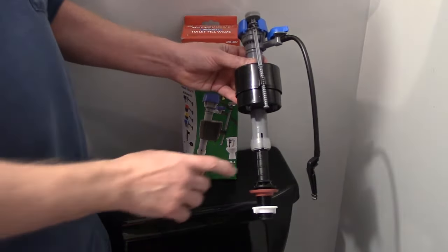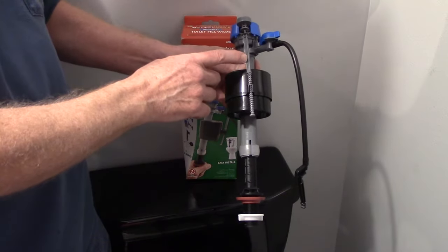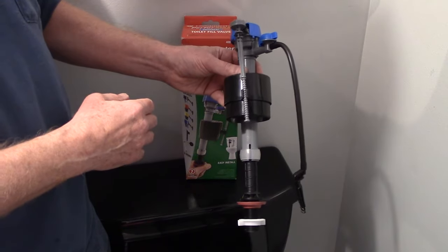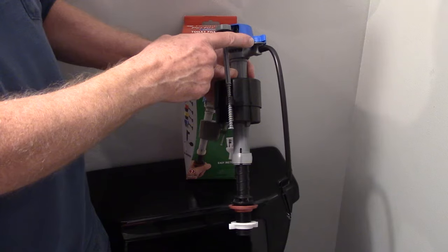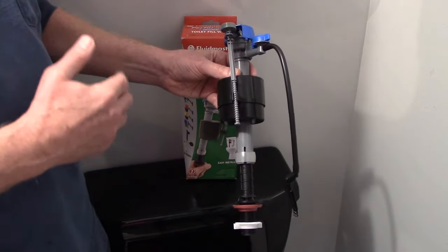The Performax will adjust from 9 to 14 inches. Then you can adjust the float to get the right amount of water in the toilet tank for the best flushing. You can also adjust the amount of water in the bowl, and this is very important for high-efficiency toilets.